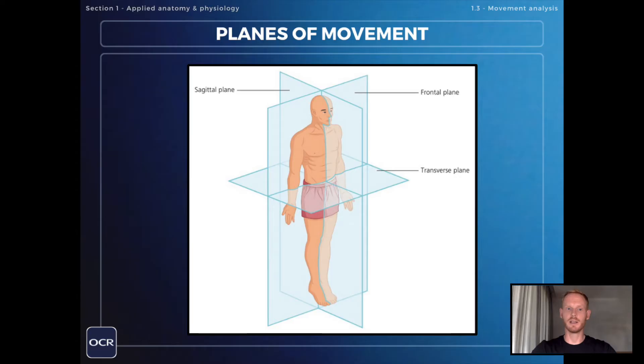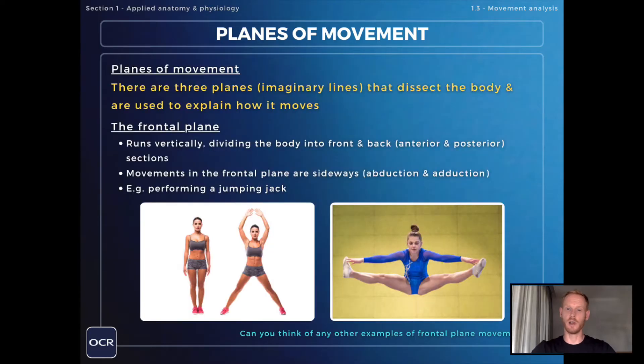Movements in this plane are always sideways, so a good example is performing a jumping jack, which involves abduction and adduction at the shoulder and hip joints.